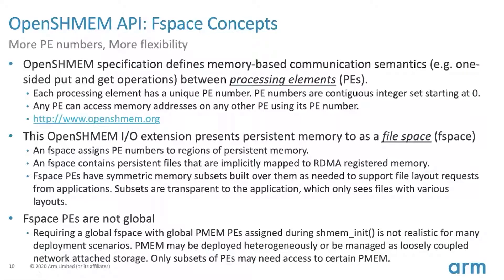The OpenSHMEM spec defines memory-based communication semantics on processing elements, and each PE has a unique PE number so we can put and get things by number. This extension presents the file space with PE numbers, so we can keep using all the same OpenSHMEM put/get semantics — it's just that some PEs will be only for reading and writing, not computation. The F-space PEs aren't global in the usual sense; because we want connection semantics and may have disaggregated storage spread across the system, the PEs you see for storage may differ across individual compute PEs.